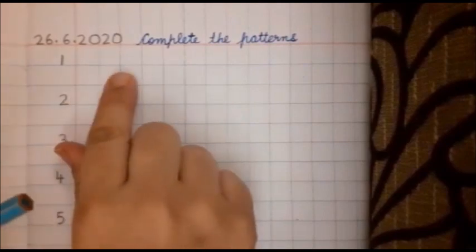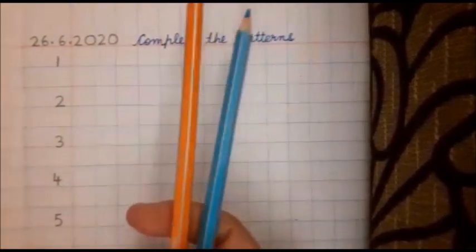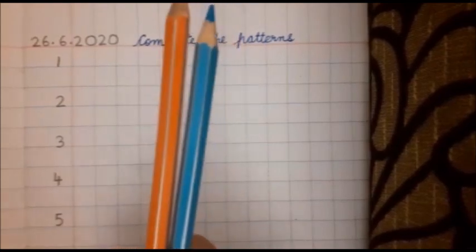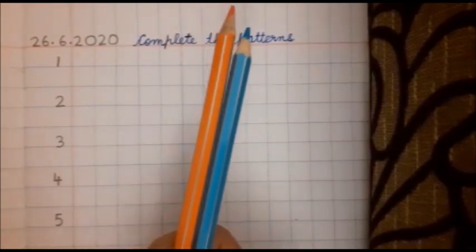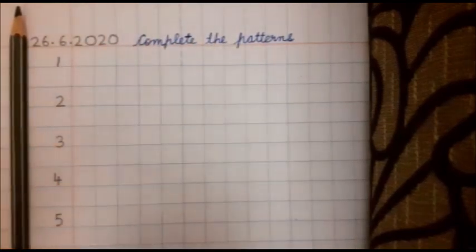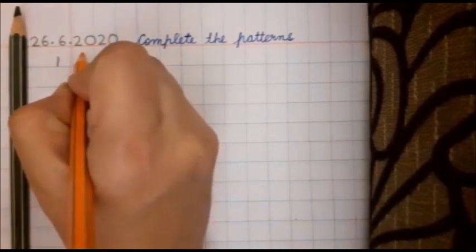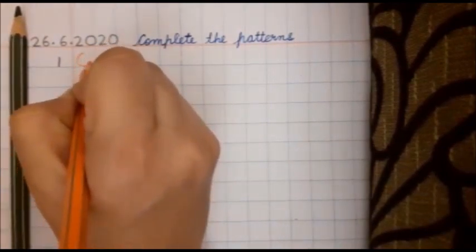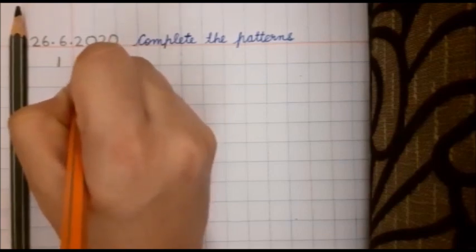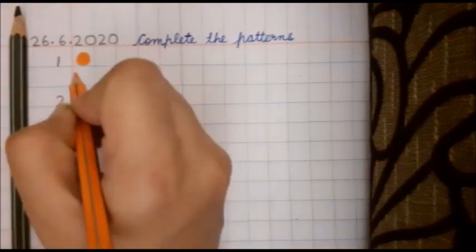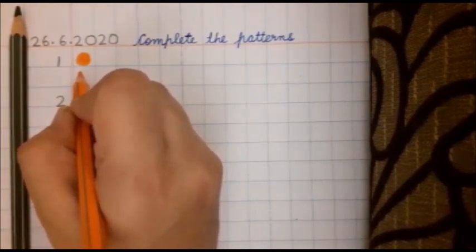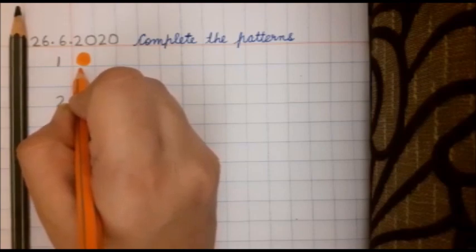For the first pattern I need 2 colour pencils, orange and blue. I have taken 2 colour pencils. Let's begin. First ma'am, see what ma'am is drawing. What is this? What is this? This is an orange circle. Very good.